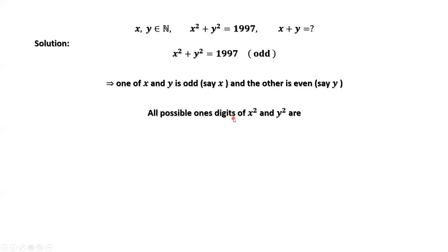All possible one's digits of x squared and y squared are 1, 4, 5, 6, 9. This is a general result. If x and y are positive integers, x squared plus y squared equals 1997. The last digit of 1997 is 7. x squared and y squared have one's digit of 1 and 6. The only possible combination from these numbers is 1 and 6, not 6 and 1, because we already assume x is odd.